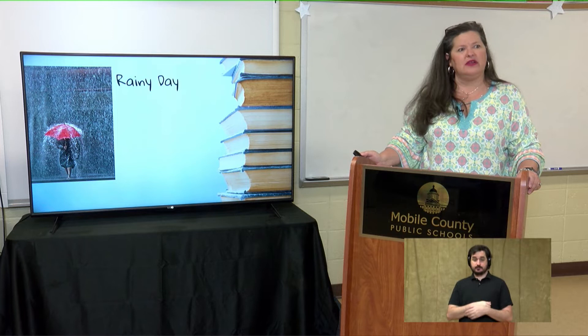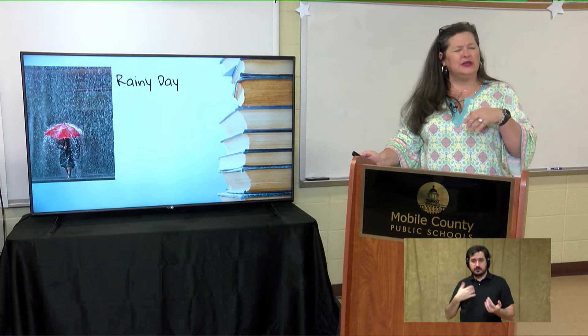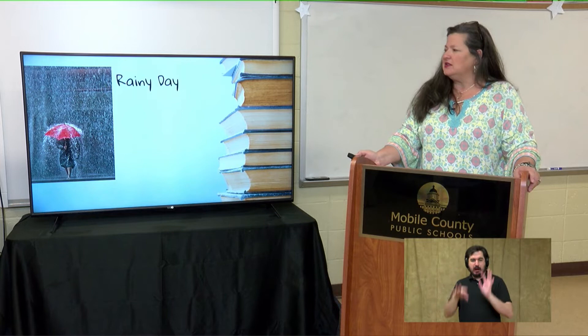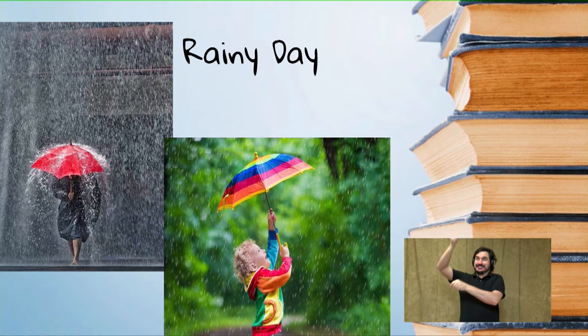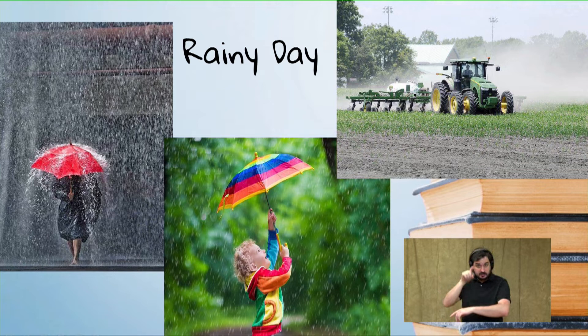I want to look at some pictures. This one is a rainy day — it's raining really hard. This is not a good thing. She's wearing black and going to or from work. Now look at this next picture — the colors are bright and vivid. The author would use happy words because this person is very happy it's raining; they're going to go out and play. What about this picture? He's a farmer growing his crops. He needs the rain. Three different perspectives on a rainy day.